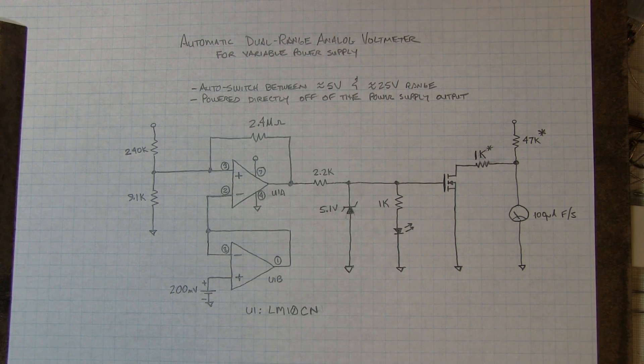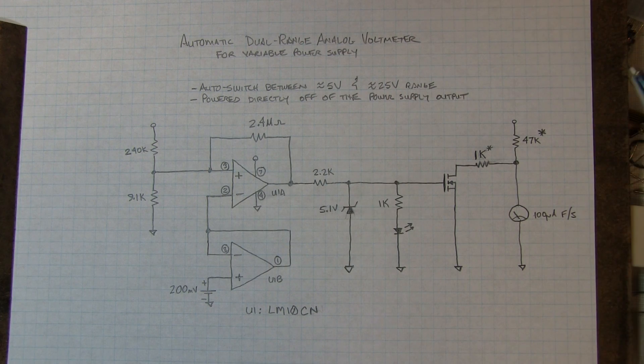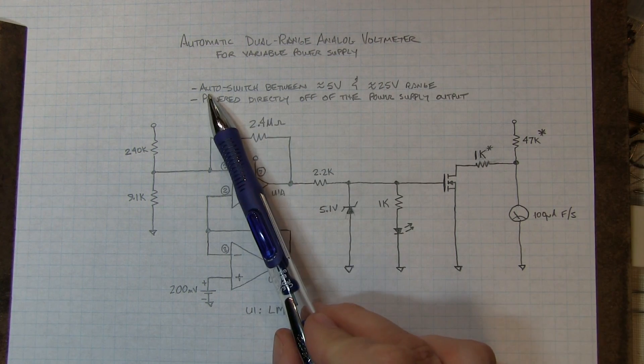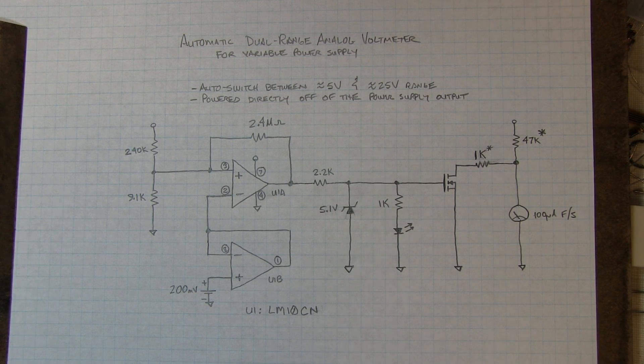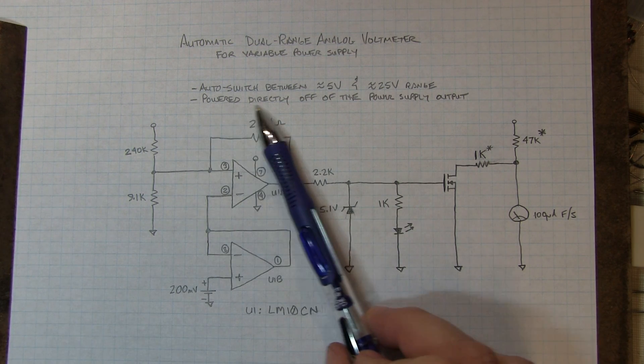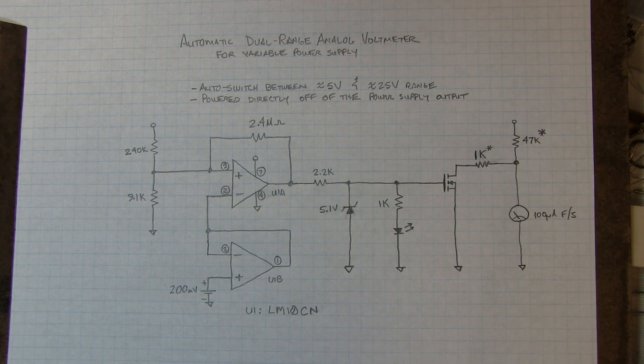So here's the schematic for the automatic dual-range analog voltmeter. And again, we had really two desires here. One is that we wanted to auto-switch between about a 5-volt range and a 25-volt range. And we want the whole circuit to be powered directly off of the output of the variable power supply that this is going to be used with.